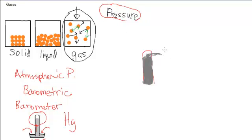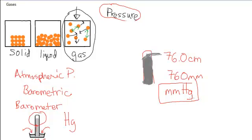And so what we would do is we would read the height of the column of mercury against some scale. And what we typically find on a typical day is that the height of this column of mercury is 76.0 centimeters, which is 760 millimeters, which is why a common unit of pressure for gases is millimeters of mercury, mmHg. Notice that the H is capitalized because the Hg stands for the symbol of mercury.